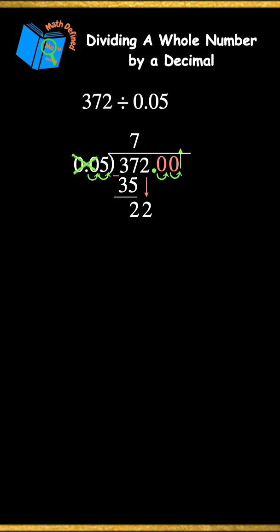I will bring down the next digit of 2. Now I have the number 22. 5 divides into 22 4 times, with 2 left over.